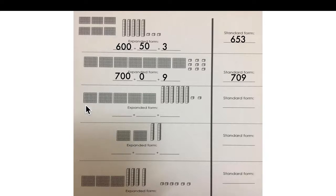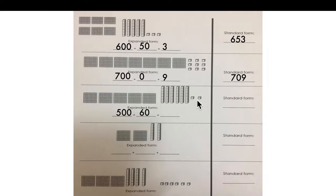Let's do the next one. How many hundreds do you have? 1, 2, 3, 4, 5. Five hundred. How many tens? Six — sixty. And how many ones? Two. Take the first digits and make the standard form — it will be five hundred sixty-two.